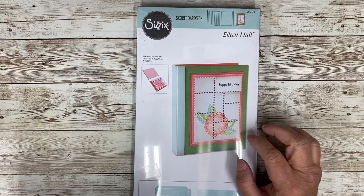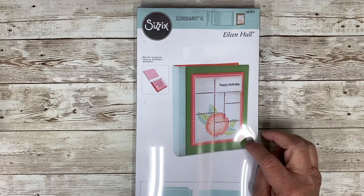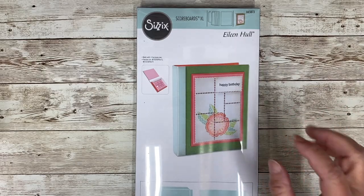It's a scoreboards die, which means it is designed to cut thick materials like mat board, chipboard, leather, fabric, fleece, heavy duty items.